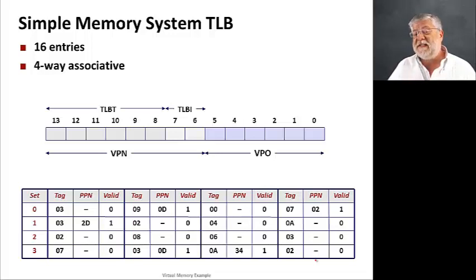And, in this case, there's only 16 entries. This is also a very tiny TLB. A more typical number would have been 256 or maybe 1K of entries. But again, here we only have 16 and four-way set associative, meaning that there's four entries per set.